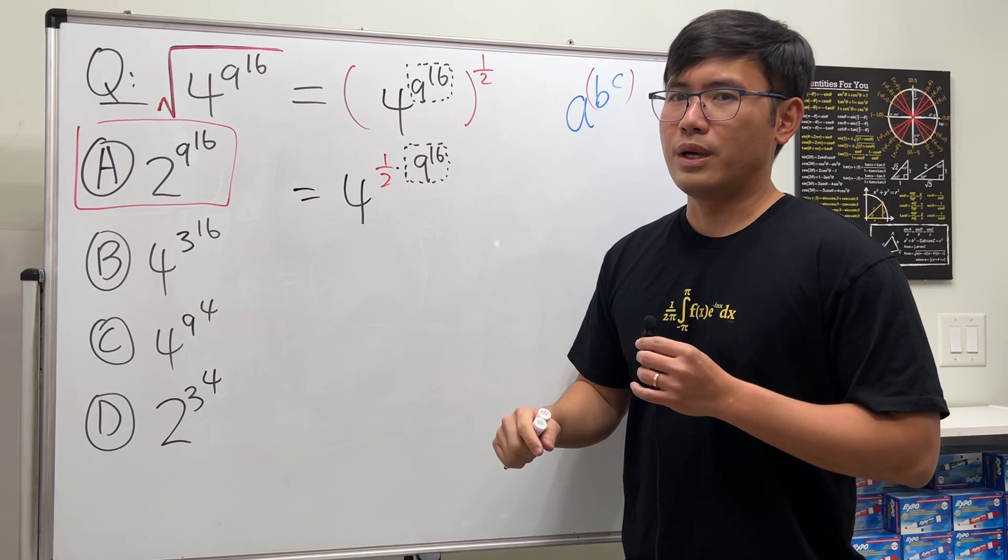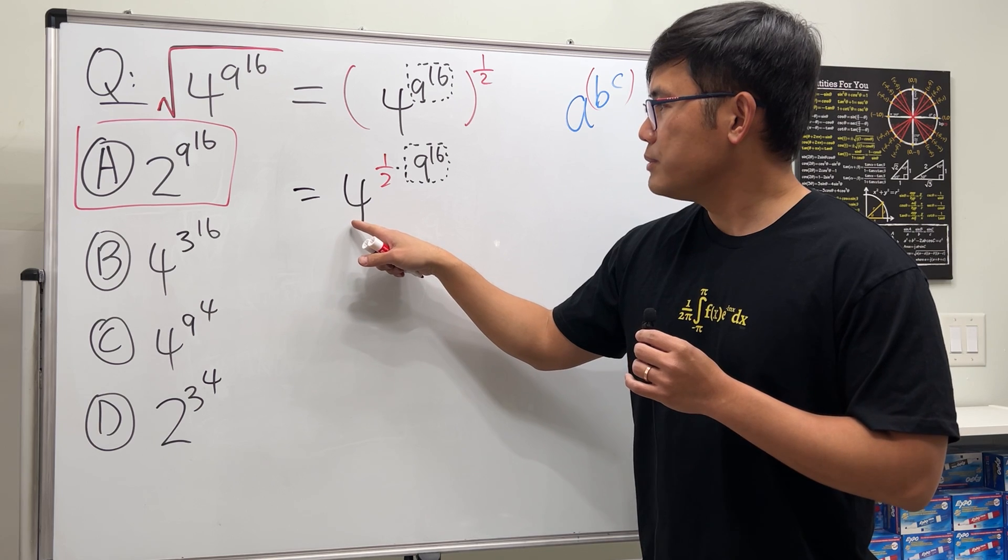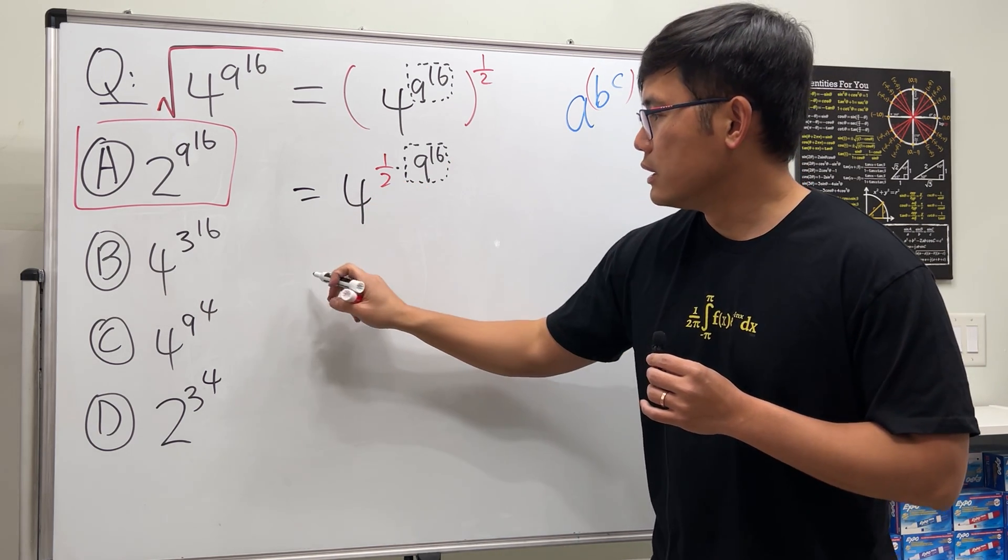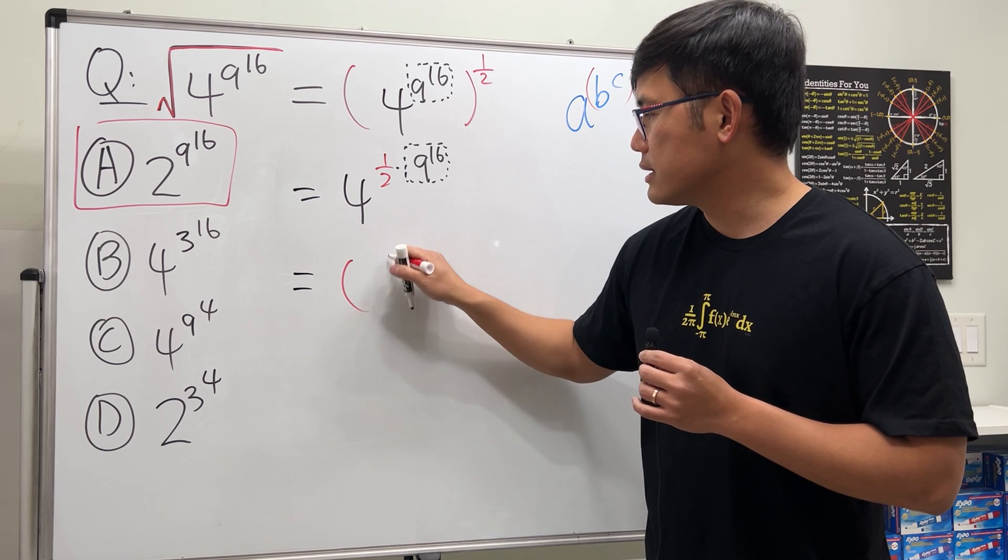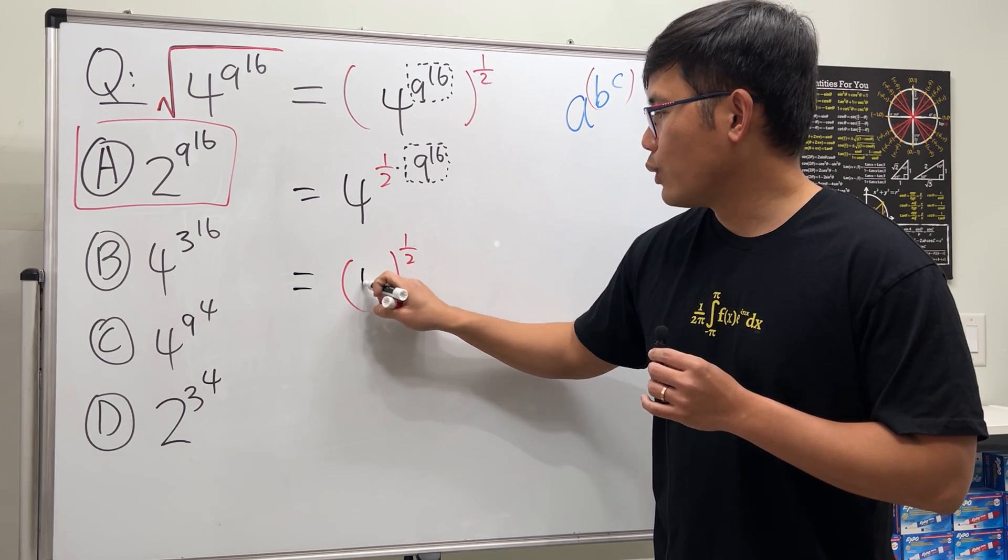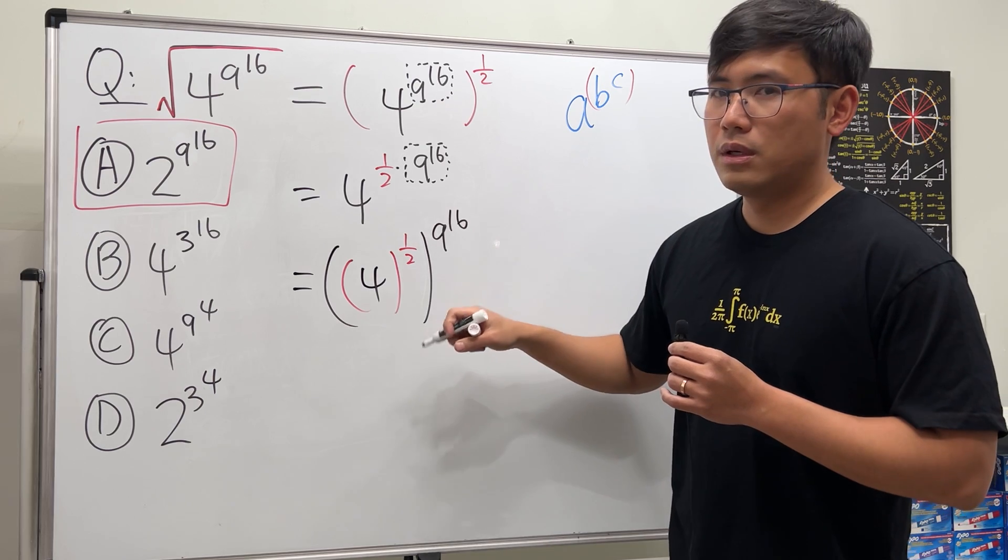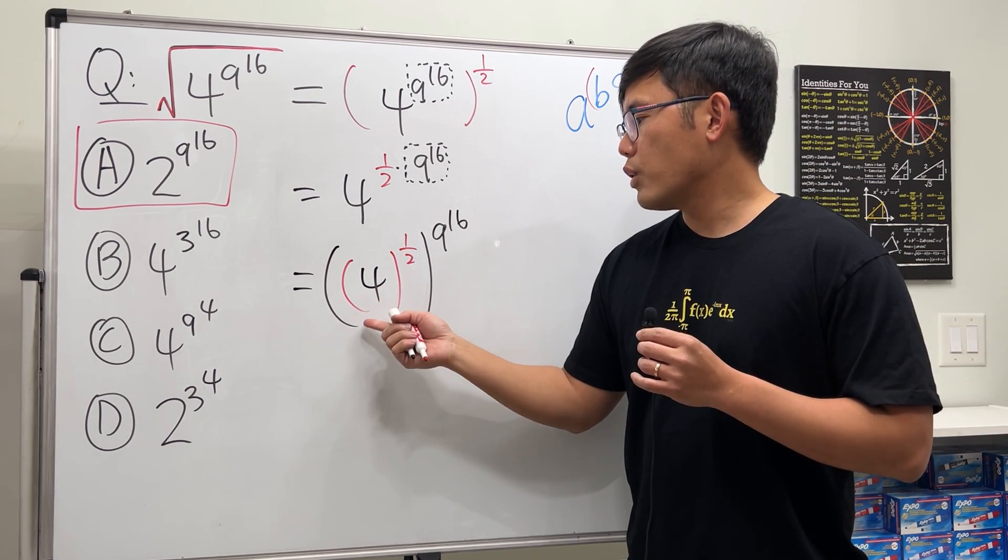So this right here, I will just put it as 4 to the one-half power and then 9 to the 16th power. And this right here is just a square root. Square root of 4 is just a 2. It's not plus or minus 2, all right.